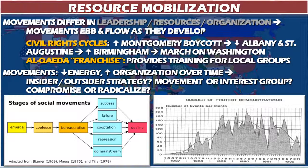Another example of providing resources: the terrorist group Al Qaeda acts as a franchisor, providing training to local revolutionary or rebellious groups ranging from the Philippines to Yemen to sub-Saharan Africa. Even though these groups may not share the same cause as Osama bin Laden, they affiliate with Al Qaeda to get training in bomb-making, secrecy, and guerrilla fighting. These groups become more successful because they acquire skills and resources through that affiliation.